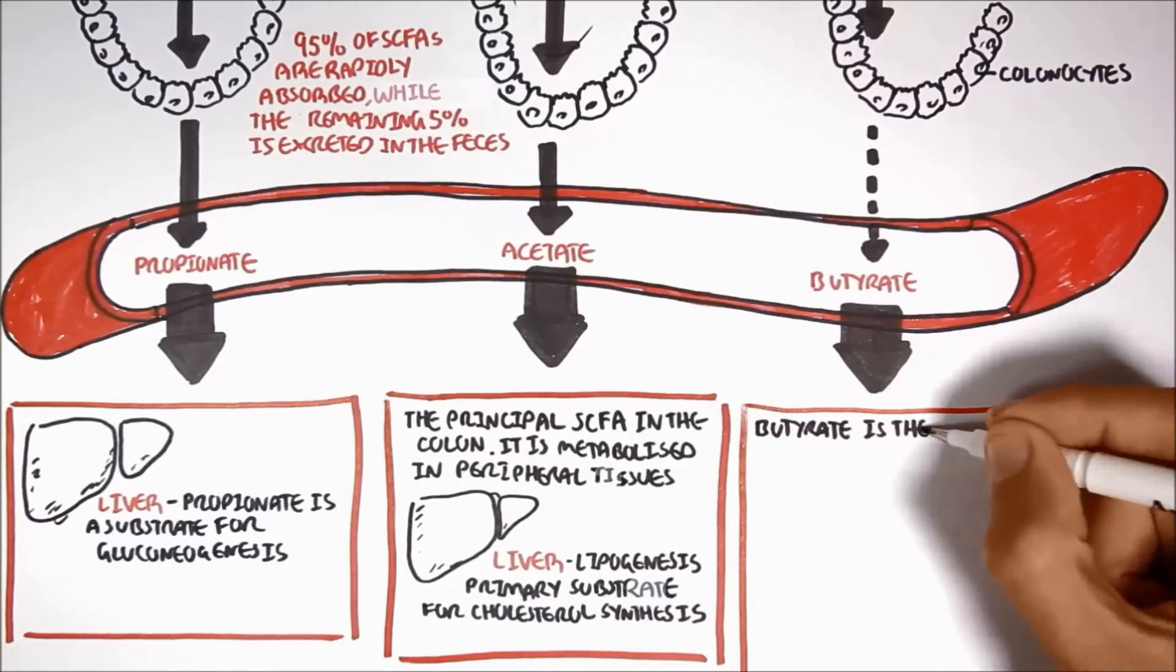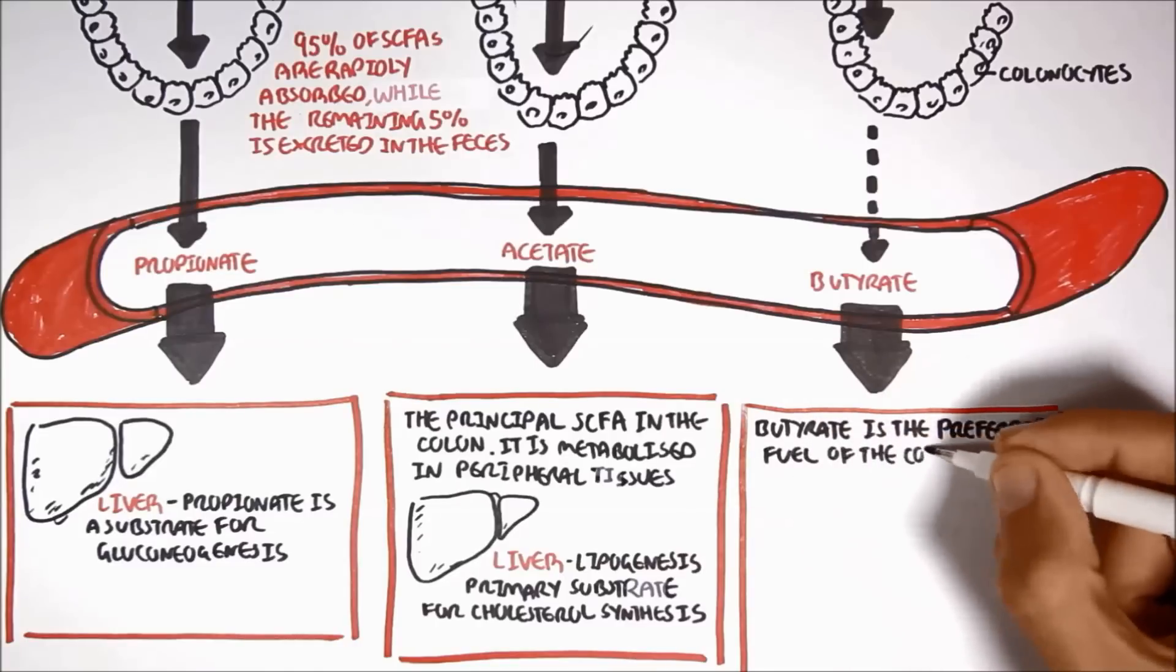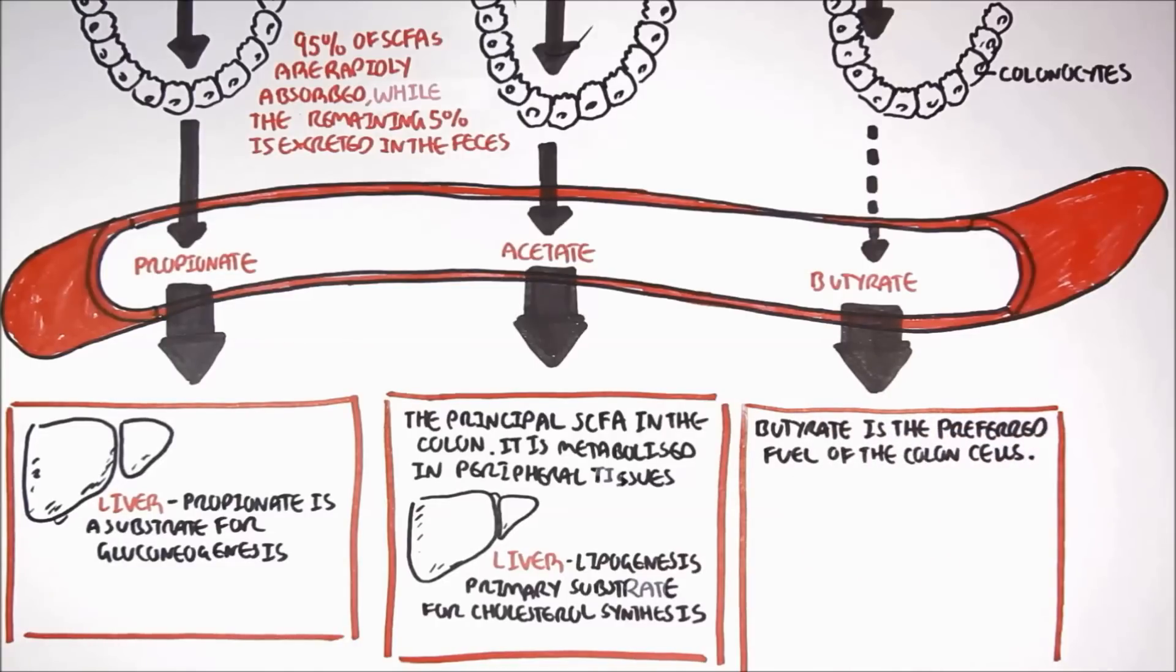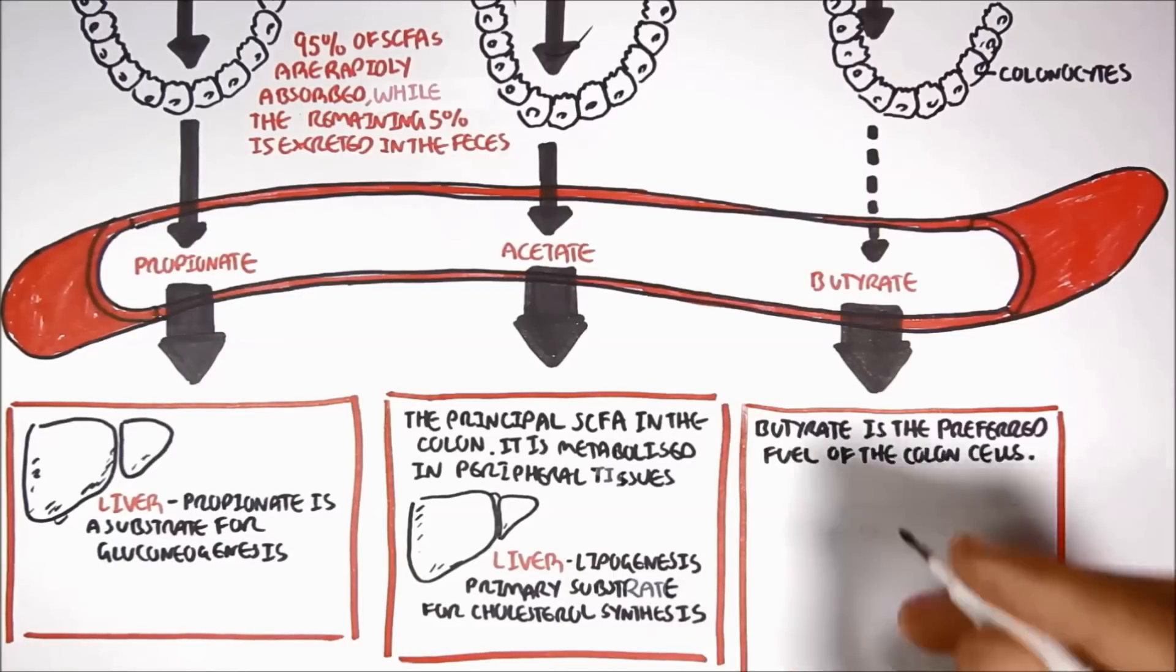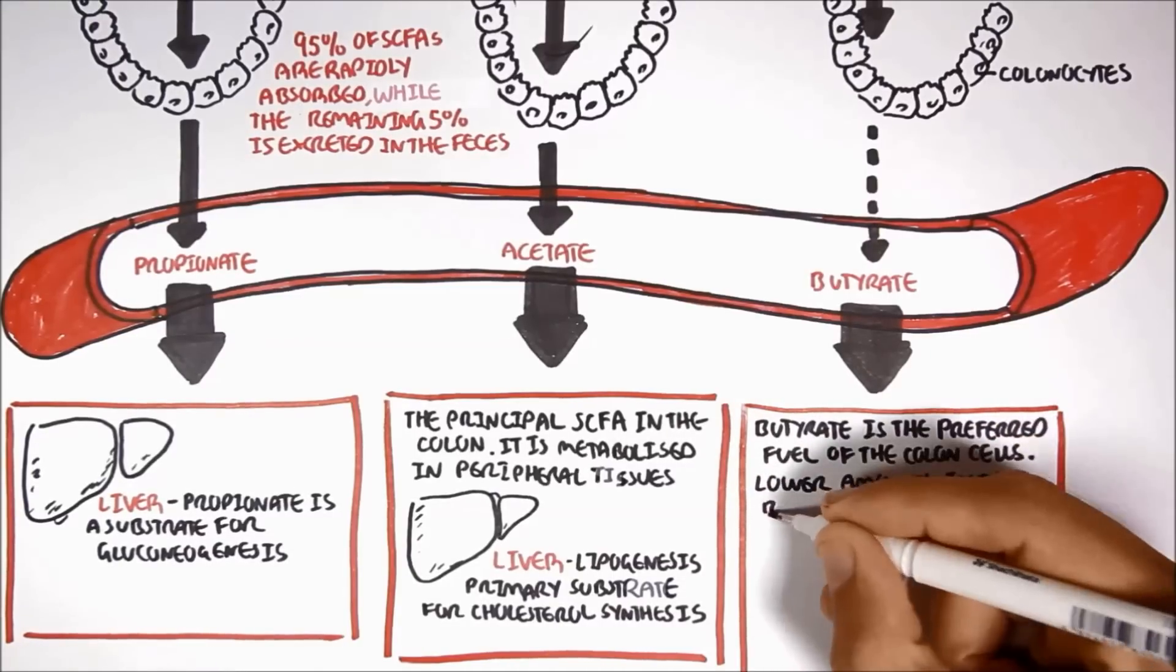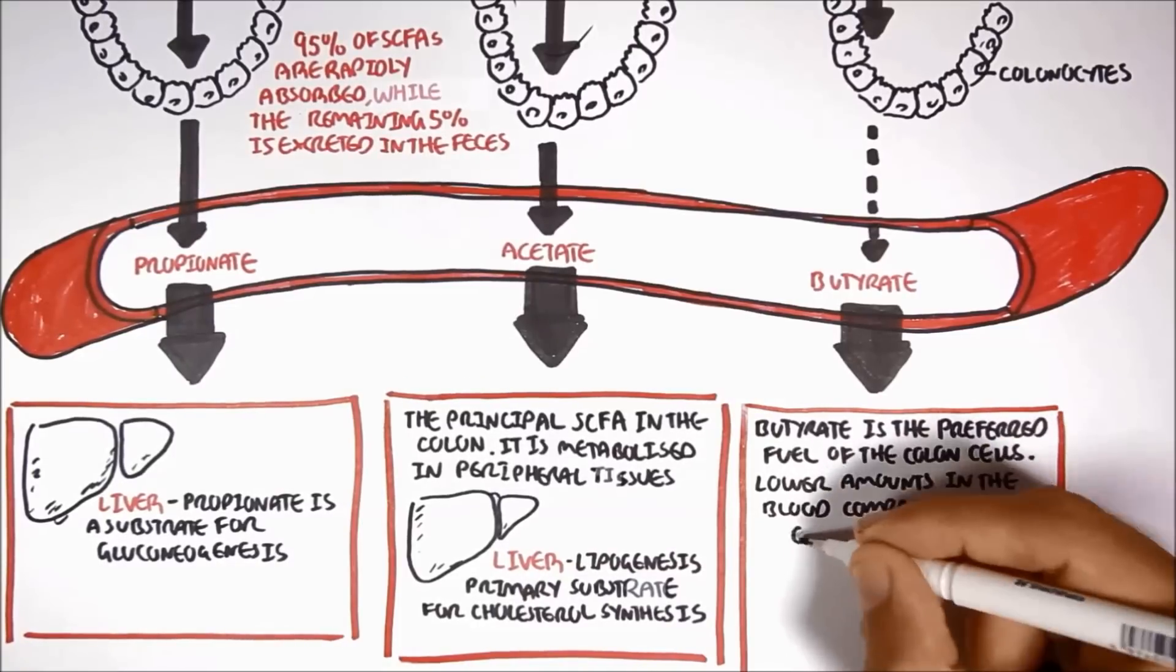Butyrate is the preferred fuel for colon cells. About 75% of energy for colon cells come from butyrate. And because of this, there are lower amounts of butyrate in the blood, compared to the other short-chain fatty acids.